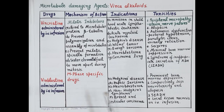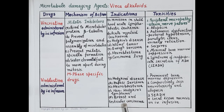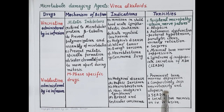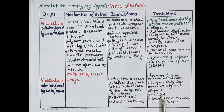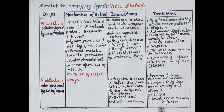Vinblastine is used for the treatment of Hodgkin's disease, Kaposi sarcoma, neuroblastoma, non-Hodgkin lymphoma, and breast and testicular carcinoma. Unlike vincristine, vinblastine causes prominent bone marrow depression, while neurotoxicity and alopecia are less compared to vincristine. Vinblastine can also produce syndrome of inappropriate secretion of antidiuretic hormone. IV infusion of all these drugs can cause local tissue necrosis.